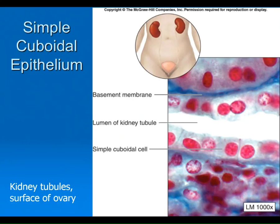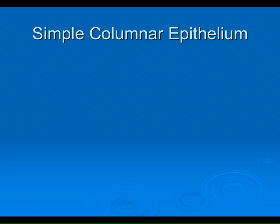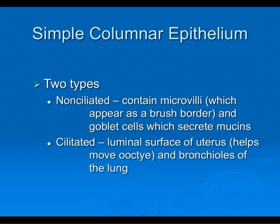Simple cuboidal is usually arranged in a circular pattern because it's what we find in the kidney tubules — you've seen that before. Simple columnar lines the digestive system, specifically the small intestine. In lab the simple columnar we looked at had microvilli, increasing surface area for absorption. However, there is another type of simple columnar with cilia, found for example in the fallopian tube — we didn't see that kind in lab, but I'll show you a picture.